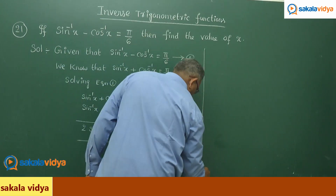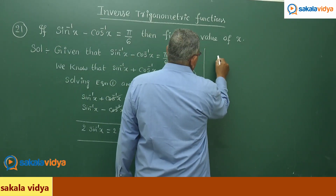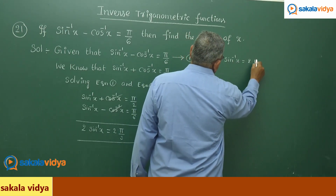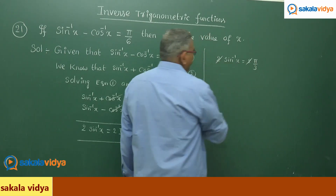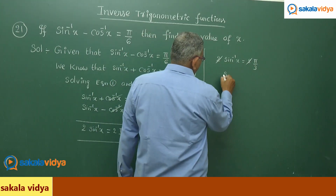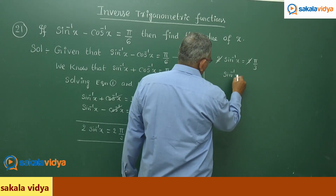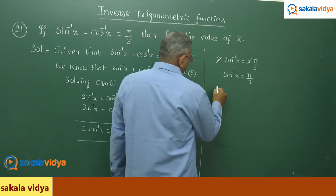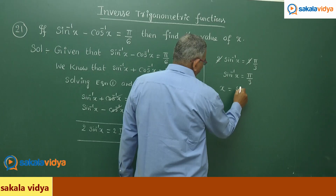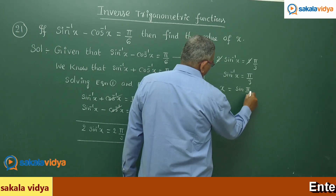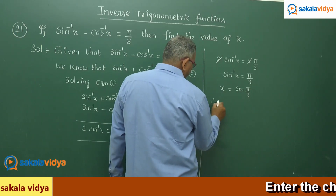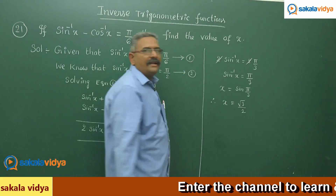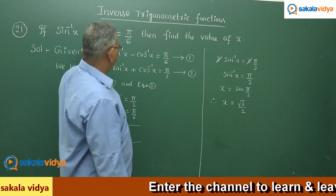We have sin inverse x equal to pi by 3. By the definition of the inverse trigonometric function, we can write x equals sin of pi by 3. Therefore, x is equal to sin 60, and sin 60 is root 3 by 2. So this is the value — the equation has been solved. x is equal to root 3 by 2.